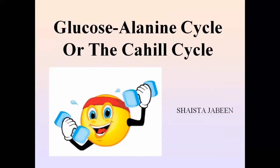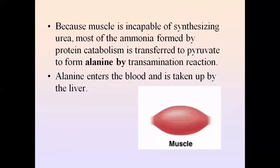In the glucose-alanine cycle, there is a transport of alanine from the muscles to the liver, and then from the liver there is synthesis of glucose, which is transported back to the muscles. In the muscles, when protein catabolism takes place, ammonia is released from the amino acids. Ammonia is a toxic substance and must be eliminated. While ammonia is normally converted to urea in the urea cycle, in the muscles there is no such mechanism — urea cannot be synthesized in the muscles.